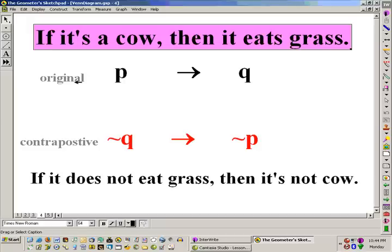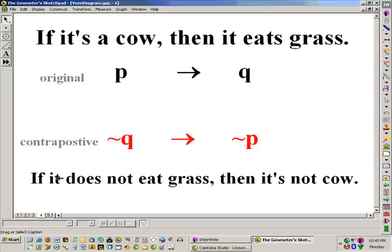If it's a cow, then it eats grass. If that original statement is true, what about the contrapositive of this sentence? And that would state, if it does not eat grass, then it's not a cow. This also would be a true sentence. Every example of something that does not eat grass, you couldn't point to it and say it is a cow with a counterexample.